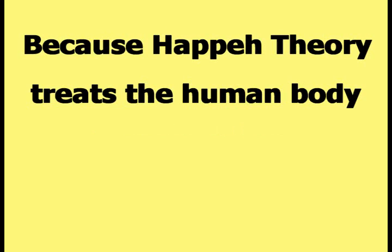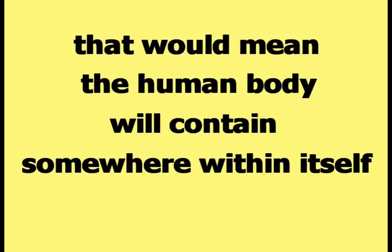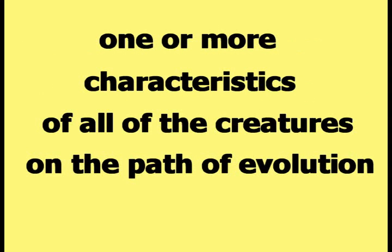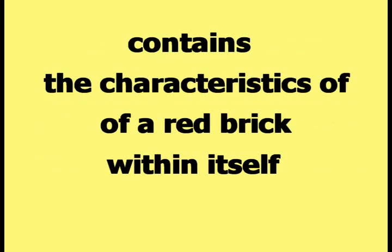Because Happy Theory treats the human body as if it is constructed out of all of the creatures on the path of evolution, that would mean the human body will contain somewhere within itself one or more characteristics of all of those creatures, like the red brick building contains the characteristics of a red brick within itself.